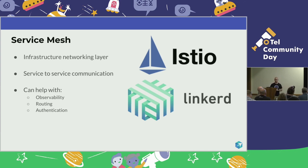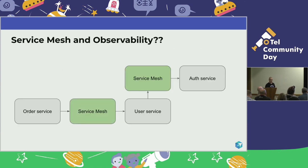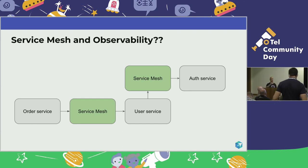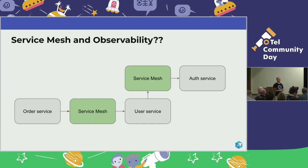Here is a complex architecture — an order service communicating with a user service and auth service — and when they communicate they do so through the mesh. If you go to most service mesh websites like Istio or Linkerd, they say you can get tracing out of the box. Imagine just turning on a magic tracing configuration and everything works. I want to show you how it really works — what you get and what you don't get.